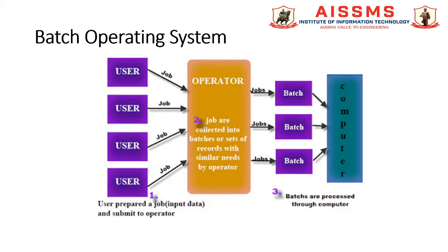Because the speed of the mechanical I/O devices are intrinsically slower than those of electronic devices. The operating system's major task was to transfer control automatically from one job to the next. The operating system was always resident in memory. In a batch environment, a process is created in response to the submission of a job.